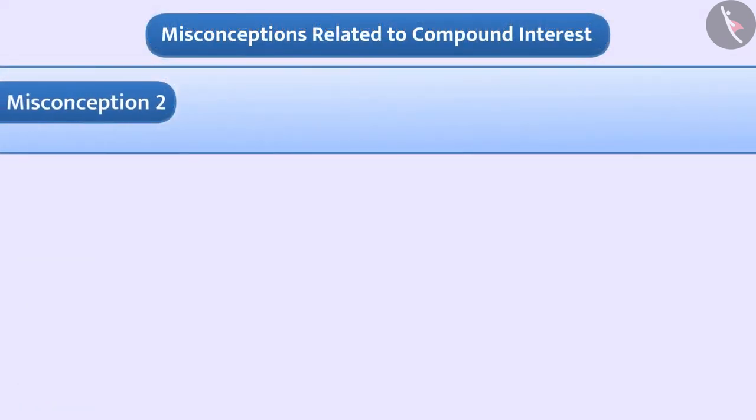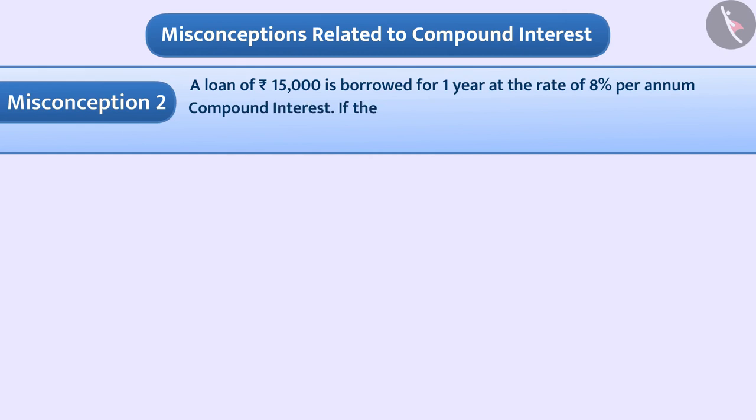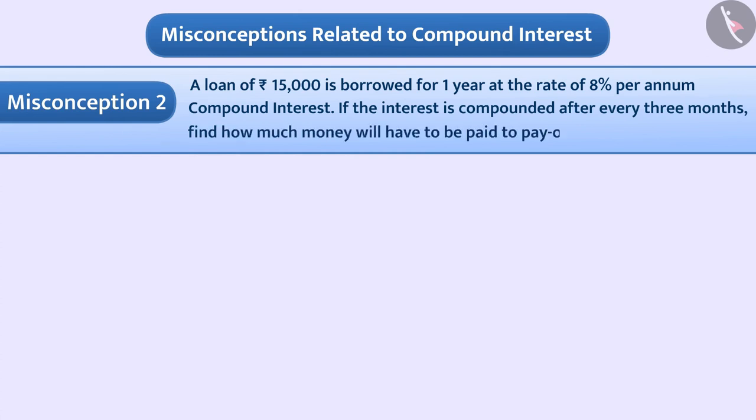Misconception 2. A loan of rupees 15,000 is borrowed for 1 year at the rate of 8% per annum compound interest. If the interest is compounded every 3 months, find how much money will have to be paid to pay off the loan.